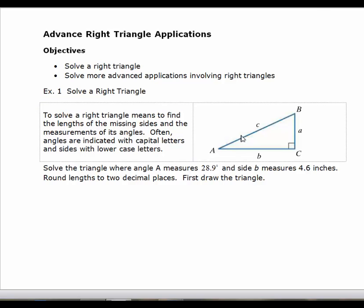I'll start by labeling what I have. I know this is 28.9 degrees, and this side right here is 4.6 inches. Now the first thing I can find, since I know this is a right triangle, the sum of A and B is 90. So B is going to equal 90 minus 28.9 degrees, which equals 61.1 degrees.